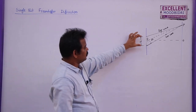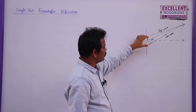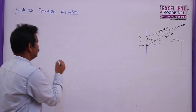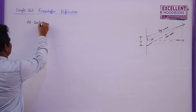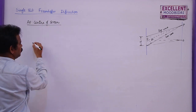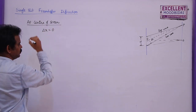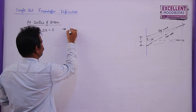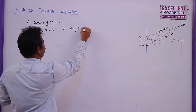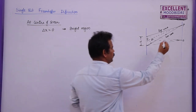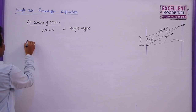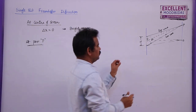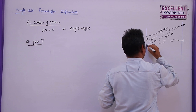In Fraunhofer diffraction, there is a slit of width d through which light passes. Generally the first wave and the last wave pass through the slit. At the center of the screen, the path difference between the first and last wave is zero, so we always get a bright region at the center. But if you take a point P on the screen, the first wave and last wave both strike point P.